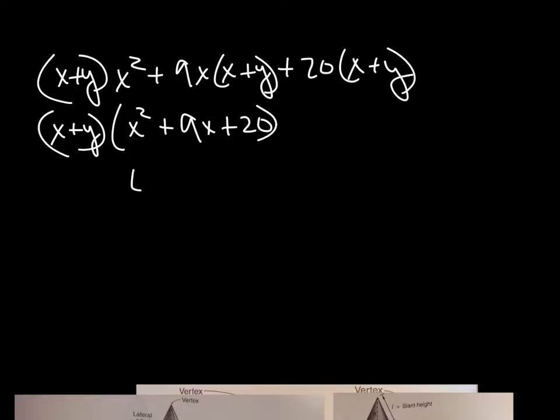Two numbers multiplied together, give me 20, added give me 9, and that's going to end up being a 5 and a 4. 5 and 4 is 9, 5 times 4 is 20. And because all the signs are positive, they're both going to be positive. And don't forget to bring this part and put that on your answer as well.